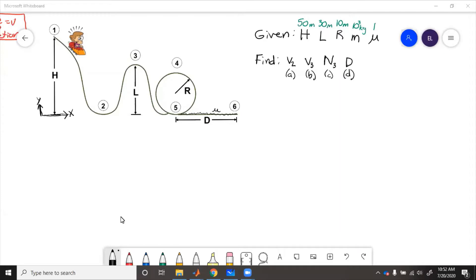There's no friction anywhere except between states five and six, so we know that from states one to five, energy is conserved. We're given h, l, r, m, and coefficient of friction.